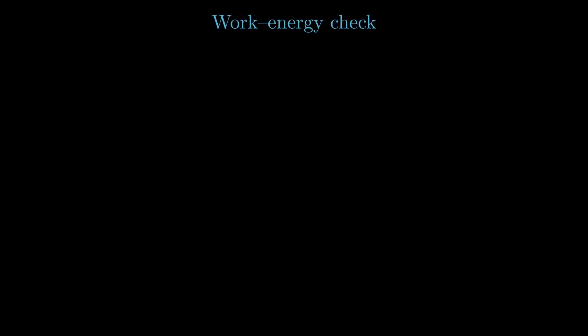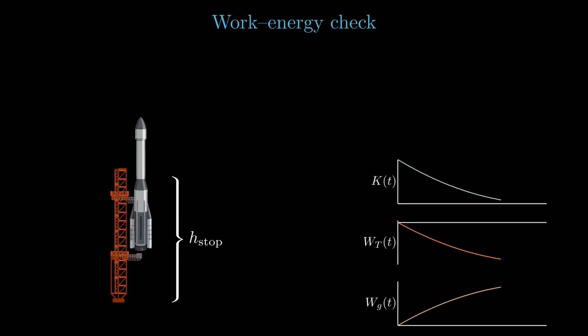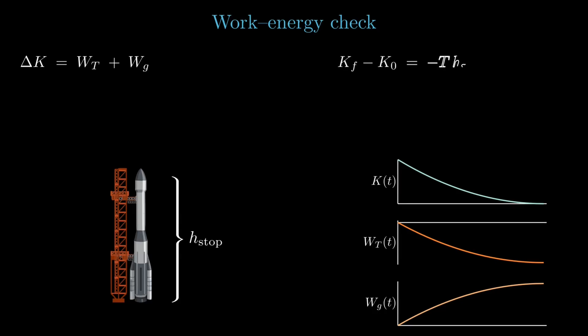Now time for a quick sanity check through the work energy theorem. So at ignition, the stage carries kinetic energy, which is set by the initial velocity. And during the landing burn, the engine does upward work against the motion, while gravity does downward work along the motion. So the engine's work undoes the speed, while gravity gives back some of the speed. If you balance those two with a change in kinetic energy, you can obtain the same result for the stopping height, as the one we got just before.